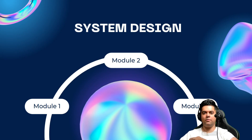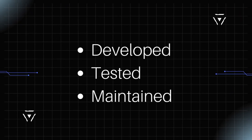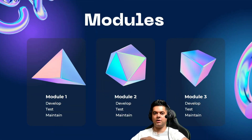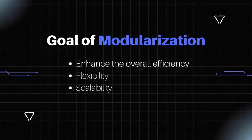System design is all about breaking the big problem statement into smaller pieces or modules, and thinking about how they interact with each other — that's how you design systems from the ground up. In other words, it involves breaking down a complex system into smaller self-contained components or modules. Each module performs a specific task or function and can be developed, tested, and maintained separately. The goal of modularization is to enhance the overall efficiency, flexibility, and scalability of the system.